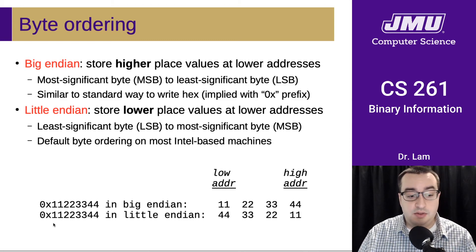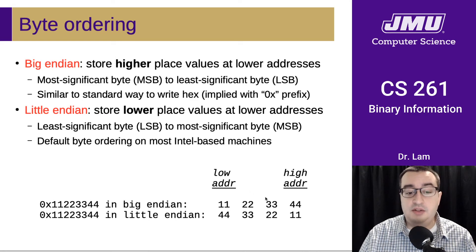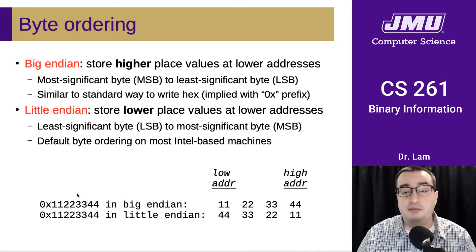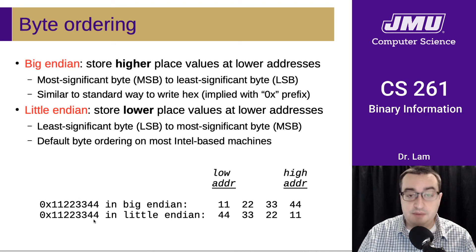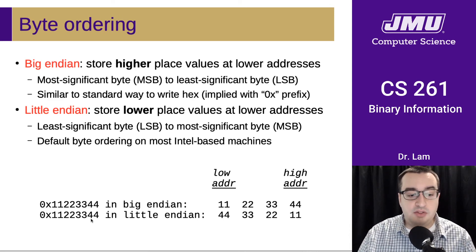For instance, here is the number hex 1-1-2-2-3-3-4-4. The way to think about this is as four bytes — four groups of two hexadecimal digits. Stored in Big Endian, we have the 11 byte, then the 22 byte, then the 33 byte, then the 44 byte — the same order as we generally write the number. Little Endian takes the least significant byte — the one with the lowest power of 2 value — and puts it first. So that would be 44, then 33, then 22, then 11.